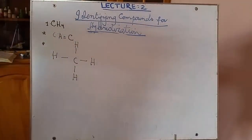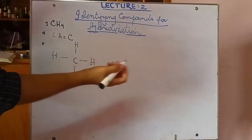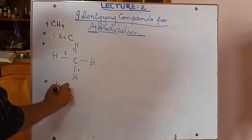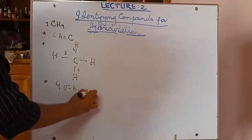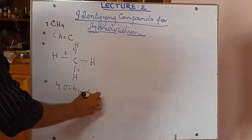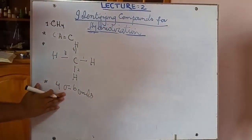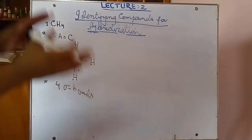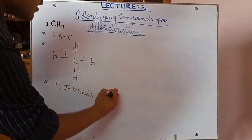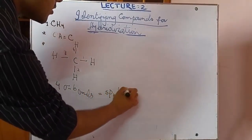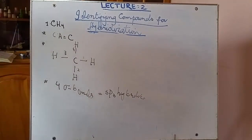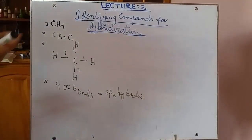Now count the number of sigma bonds — that is, single covalent bonds: 1, 2, 3, 4. We have four sigma bonds. As I told you, just one less than the number of sigma bonds gives the type of hybridization. One less than four is three, so this is sp3 hybridization.